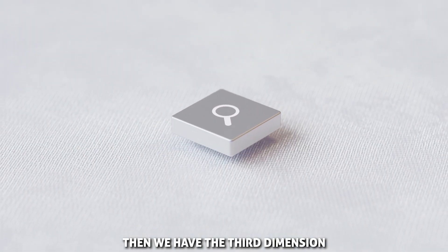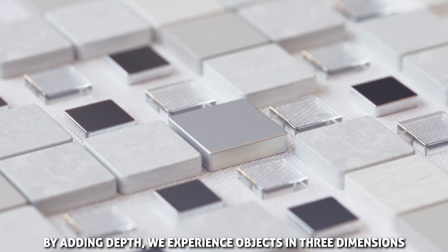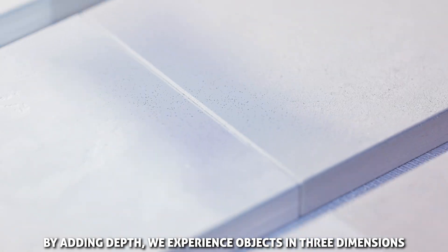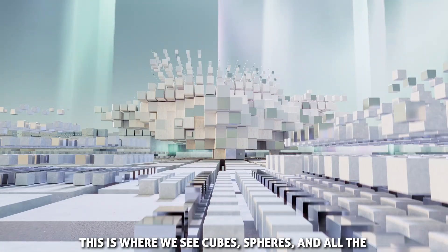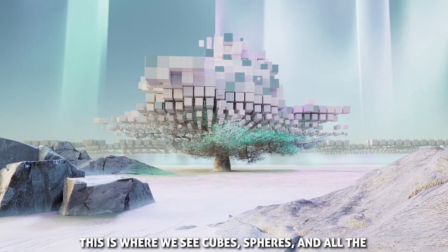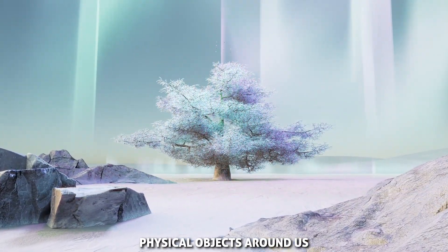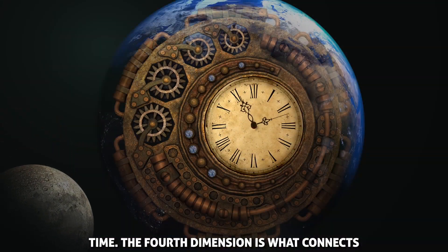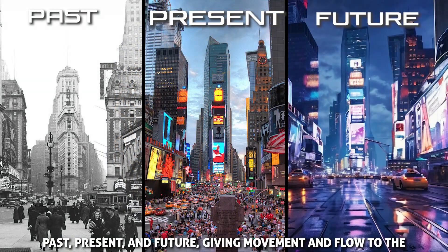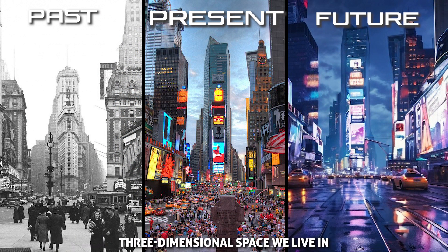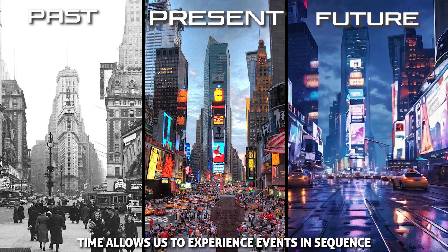Then we have the third dimension, the world as we know it. By adding depth, we experience objects in three dimensions: length, width, and height. This is where we see cubes, spheres, and all the physical objects around us. Time, the fourth dimension, is what connects past, present, and future, giving movement and flow to the three-dimensional space we live in. Time allows us to experience events in sequence.